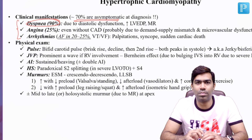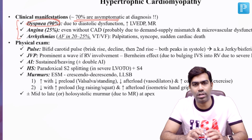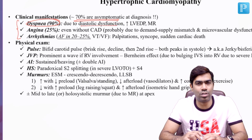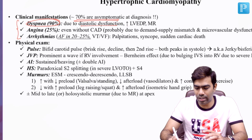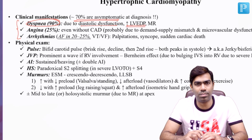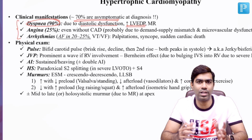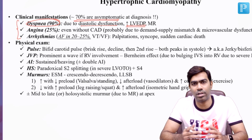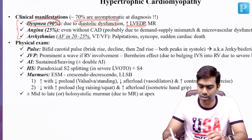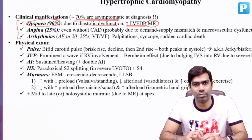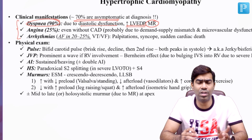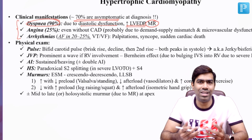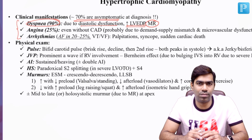The most common symptom in symptomatic HCM is dyspnea. The reason for dyspnea is diastolic dysfunction and increased left ventricular end-diastolic pressures, leading to increased left atrial pressures and pulmonary venous pressures resulting in pulmonary congestion and dyspnea, or it could be due to MR itself. MR is due to either SAM or leaflet and papillary muscle dysfunction.